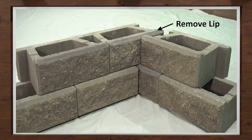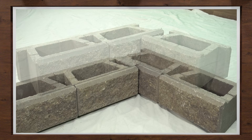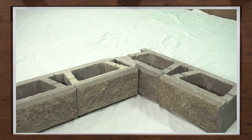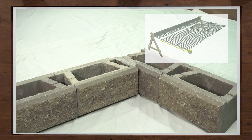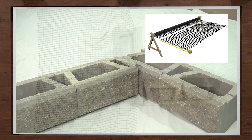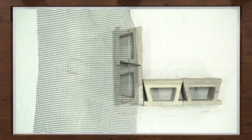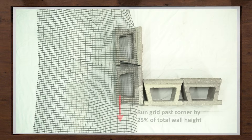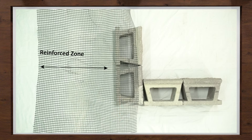What if your wall needs geogrid reinforcement on the first course? When using large wall grid, cut sections of geogrid to the specified lengths for the project. Place the cut edge of the grid — the machine or roll direction — tight against the back of the raised front lip of the block. It needs to extend past the corner by 25% of the total wall height, with it positioned behind the wall in the reinforced zone. Stake down as needed.